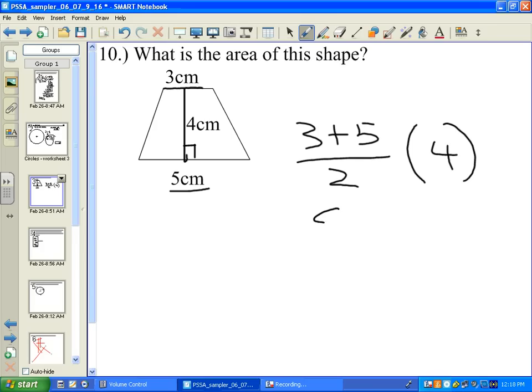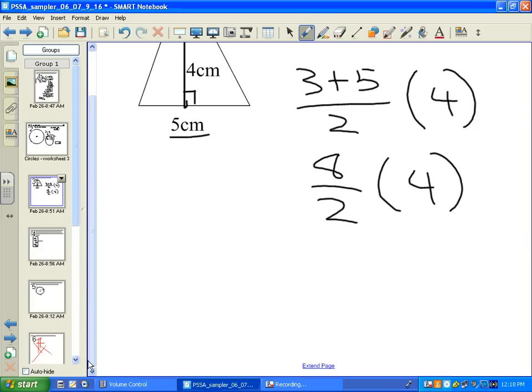3 plus 5 is 8 divided by 2. We're going to multiply this times 4. And this happens to be 4 times 4, that equals 16. And we're talking about centimeters squared, centimeters squared.